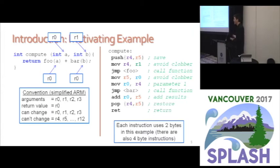Our calling convention says we're not allowed to change certain registers. We can't change R4 and R5, for instance, but we've been using them, so we need to save them on the stack and restore them at the end. And here is our final compiled function. The point I want to make is there are a lot of instructions going on here that aren't doing any useful work — they're just moving things around in registers. In fact, more than half of this function is wasted by move instructions and stack saves.